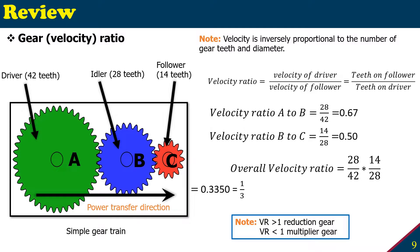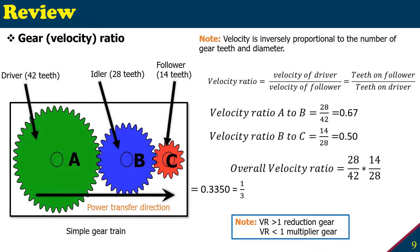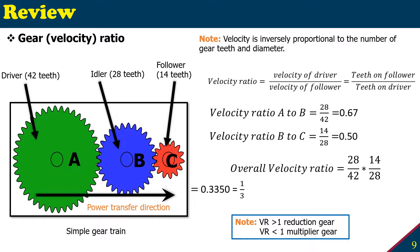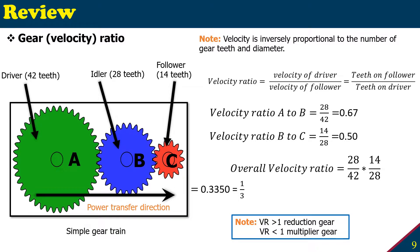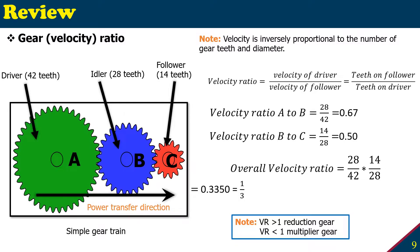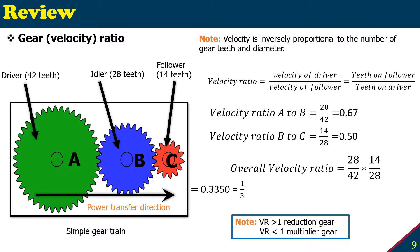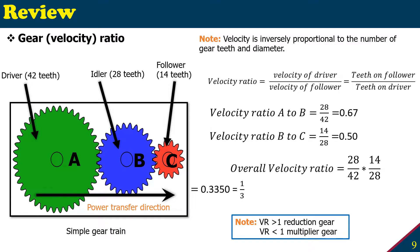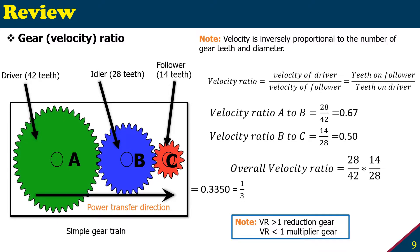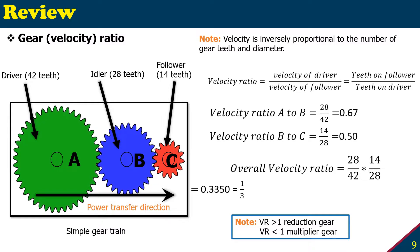The red one is moving faster compared to the green one because the green one has more diameter. For this simple gear train, the velocity ratio is the velocity of the driver over the velocity of the follower. Since it's inverse to the number of teeth, it is equal to the teeth on the follower over the teeth on the driver.